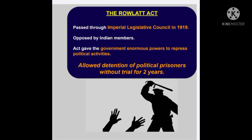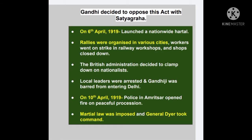The Rowlatt Act gave the government enormous power to repress political activities. If any freedom fighter carried out any activities, they could face allowed detention of political prisoners without trial for two years. Mahatma Gandhi wanted a non-violent civil disobedience movement against such an unjust law. He started this movement on 6th April, with hartals and rallies organized in various cities.